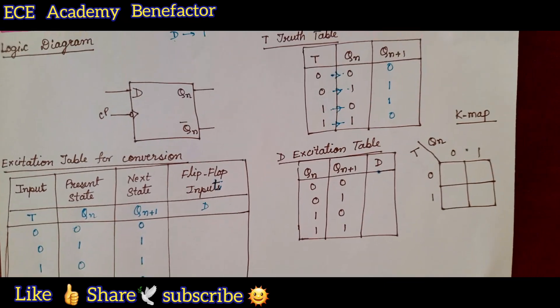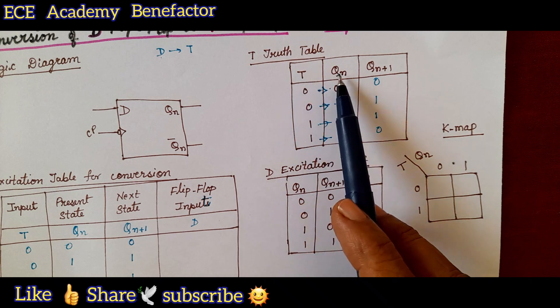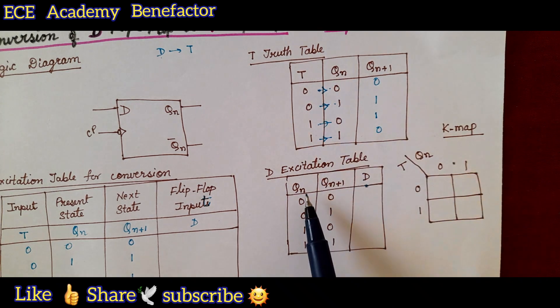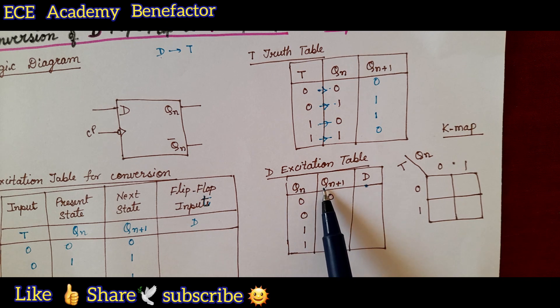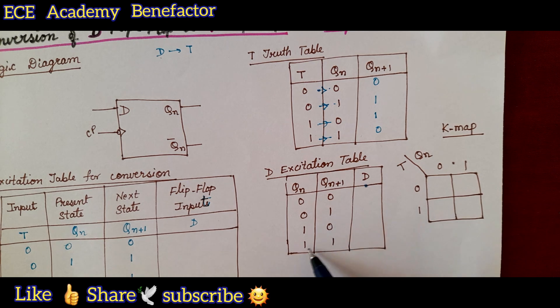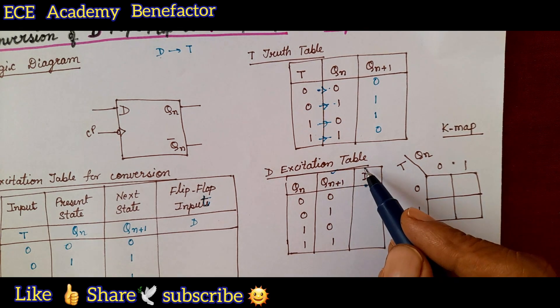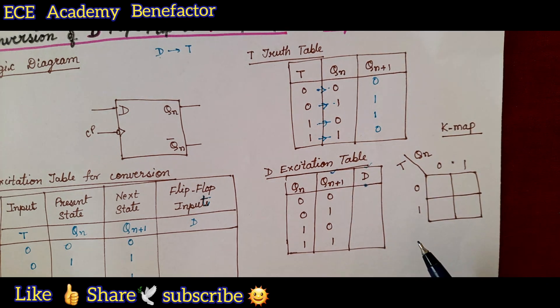What is the difference between truth table and excitation table? In truth table we write it between T and Q n. In excitation table the columns inputs are Q n and Q n plus 1. Now here we see 0 0 0 1 1 0 1 1.